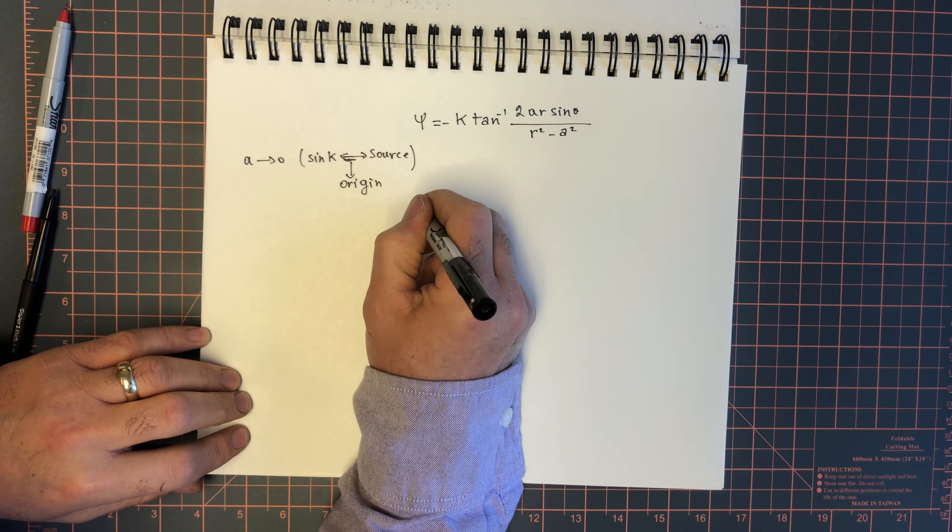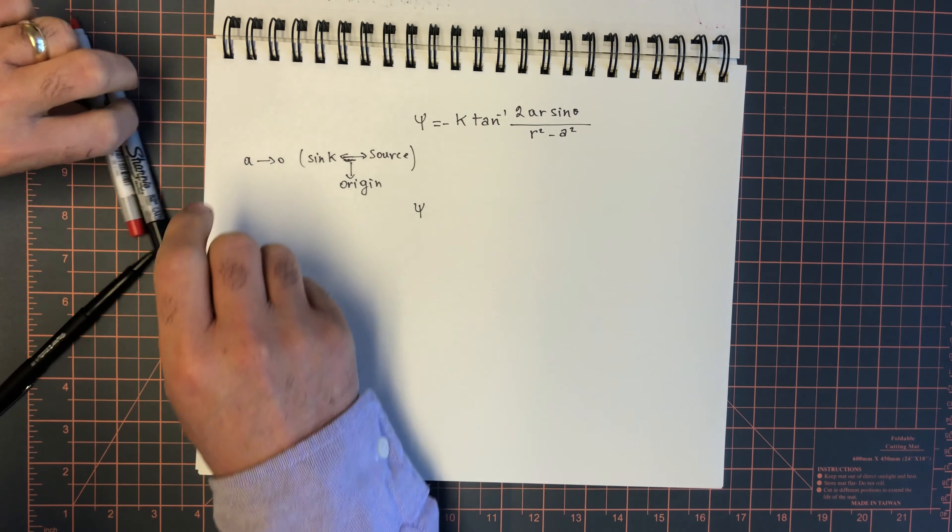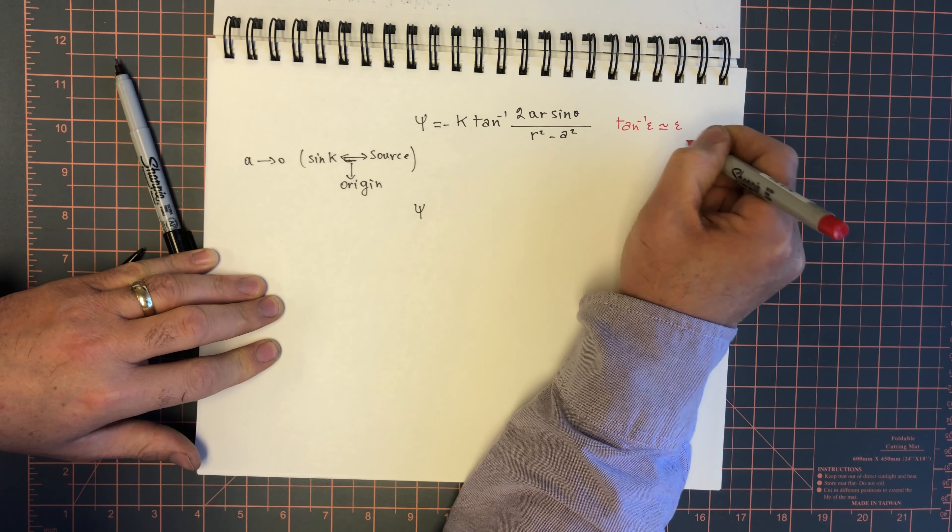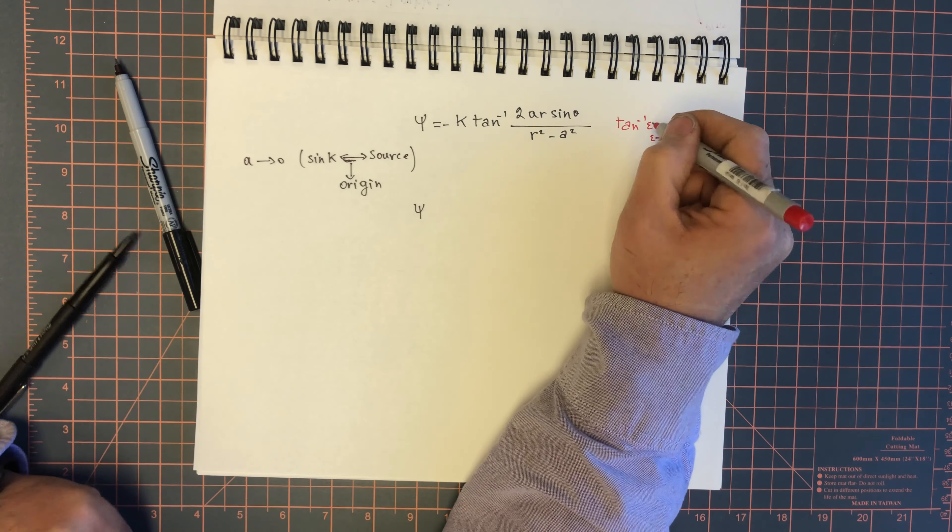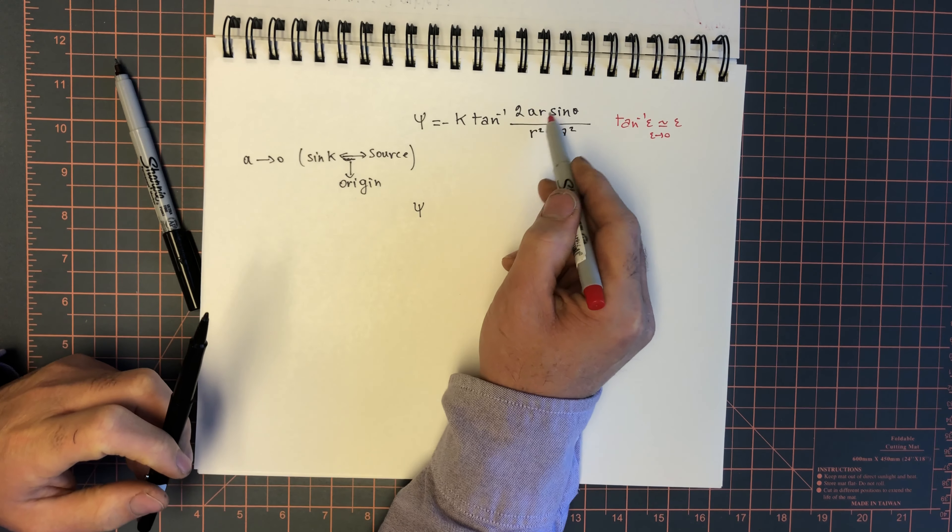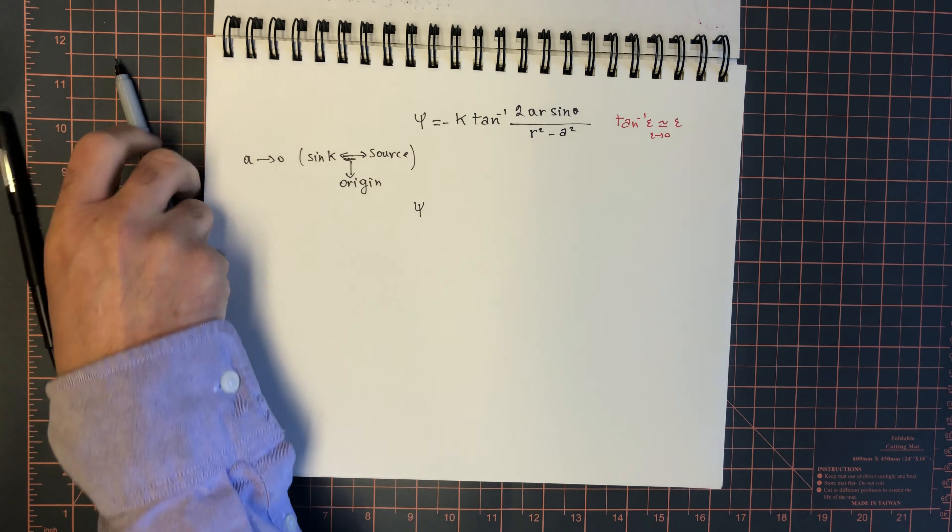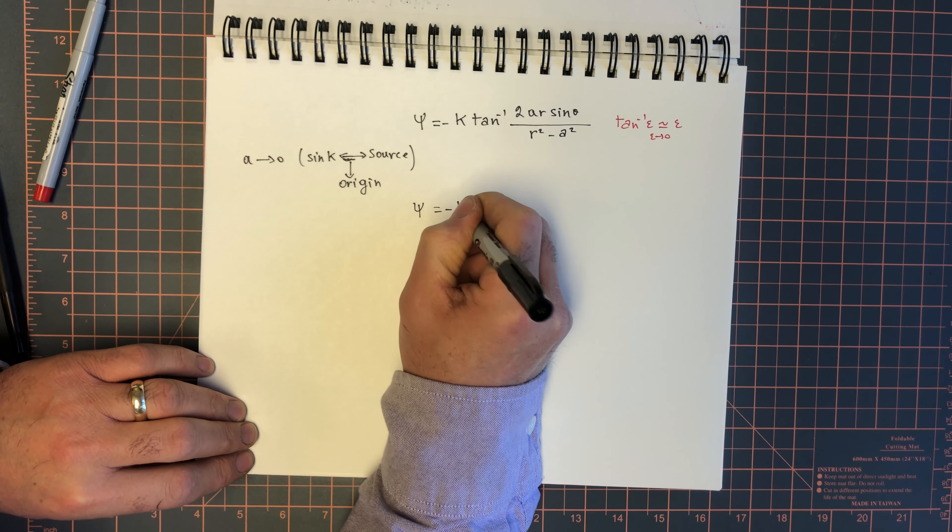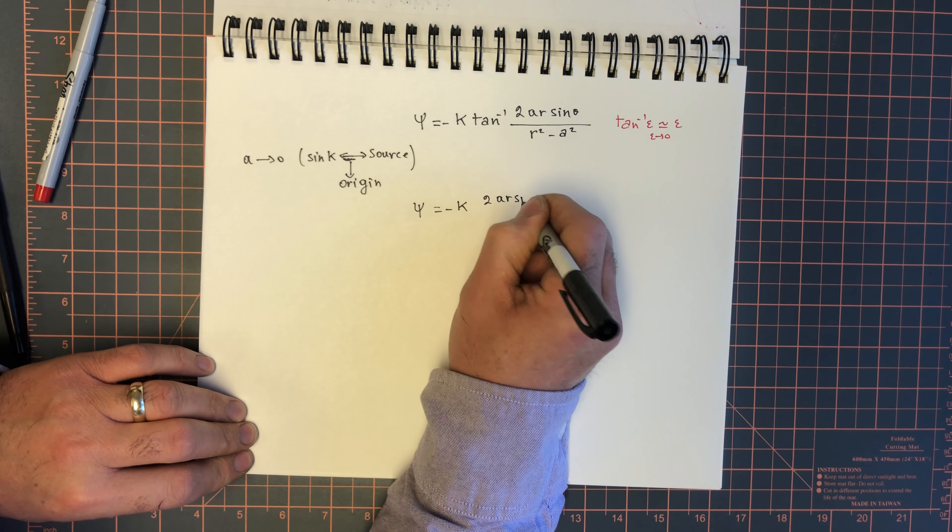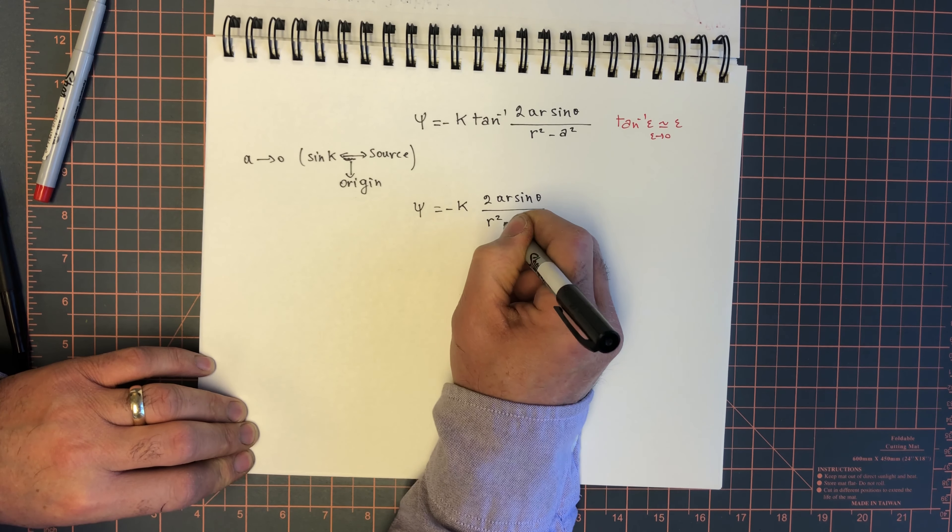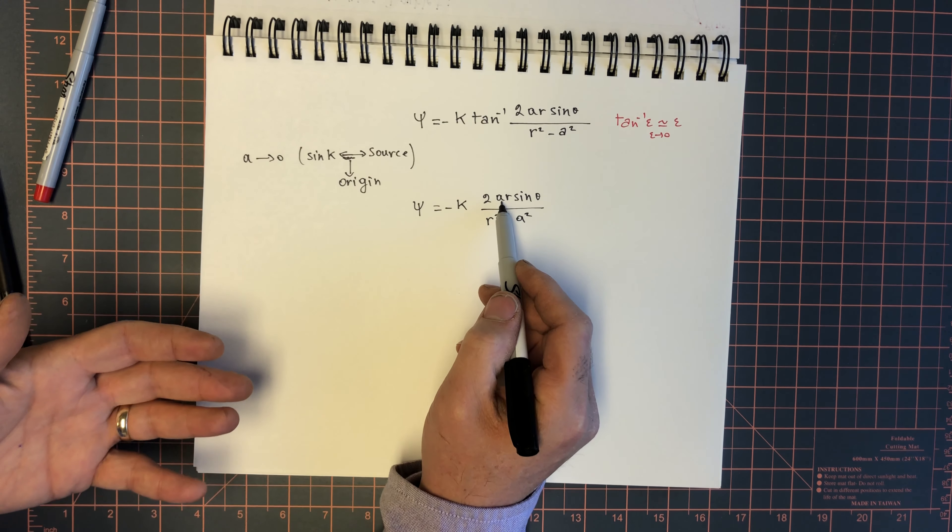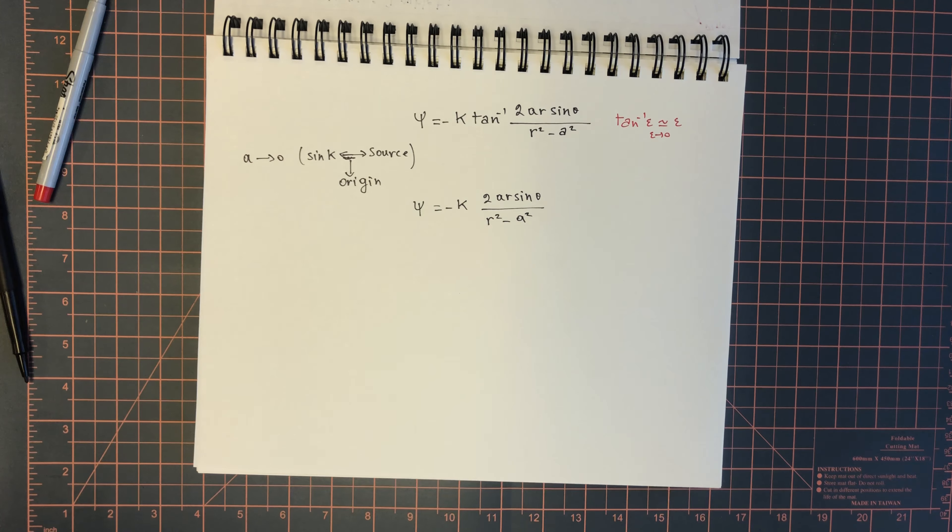For small angles, remember the identity, the arc tan epsilon is approximately equal epsilon as epsilon goes to 0. And so, as a approaches 0, this entire angle, we're going to assume that it also approaches 0. It will approach 0 because it's going to go at a higher rate than the other ones. And so, we get minus k times 2 a r sine theta over r squared minus a squared. Obviously, if a goes to 0, then we're not going to have any flow because the source and the sink are going to cancel each other out.